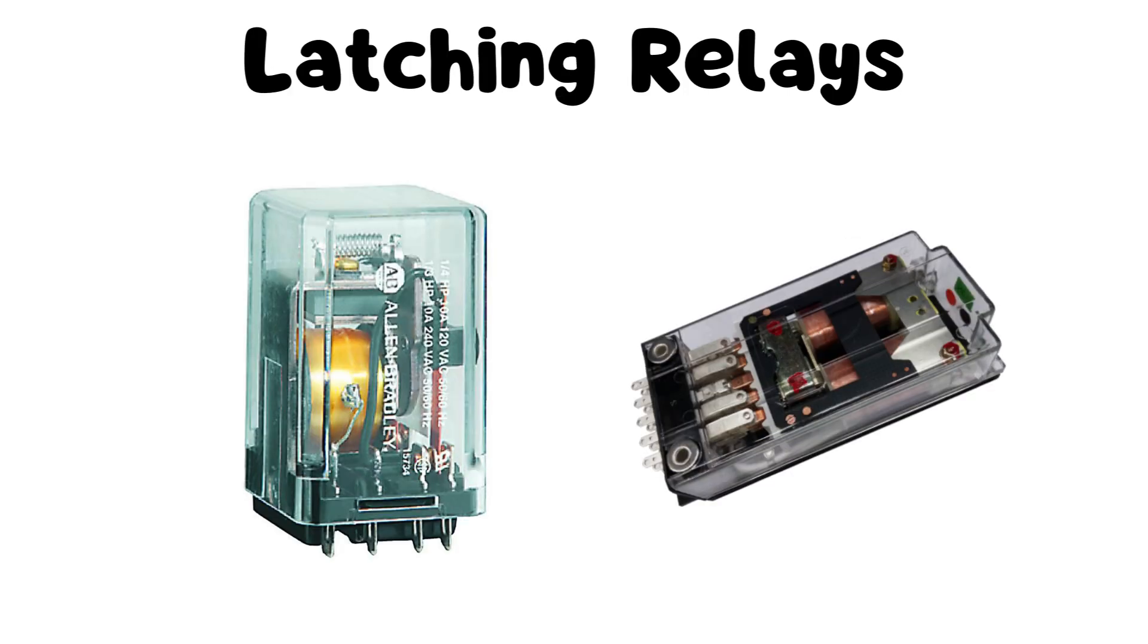Latching Relays: Latching relays have two stable states, and once switched, they remain in that state even if the power is removed. They require a short electrical pulse to switch between states, and this pulse can be applied in one direction to set the relay and in the opposite direction to reset it. Latching relays are commonly used in applications where power consumption needs to be minimized, such as in battery-powered devices.